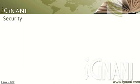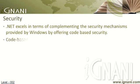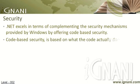Security. .NET excels in terms of complementing the security mechanisms provided by Windows by offering code-based security, while Windows only offers role-based security. While role-based security is based on the identity of the account under which the process is running, by contrast, code-based security is based on what the code actually does and on how much the code is trusted.